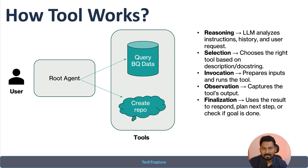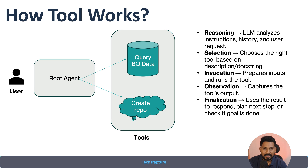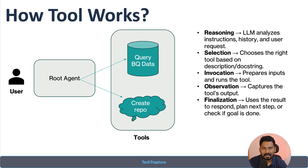This is how the whole tool process works at the backend. Based on the user's input, the LLM applies its reasoning capability to decide which tool to invoke, so you should always give better descriptions and better prompts to make your agent perform more efficiently. Once the agent decides which tool to call, it collects input from the user, invokes the necessary tool, gets the response, and provides it back to your root agent. That's the simple flow to remember.